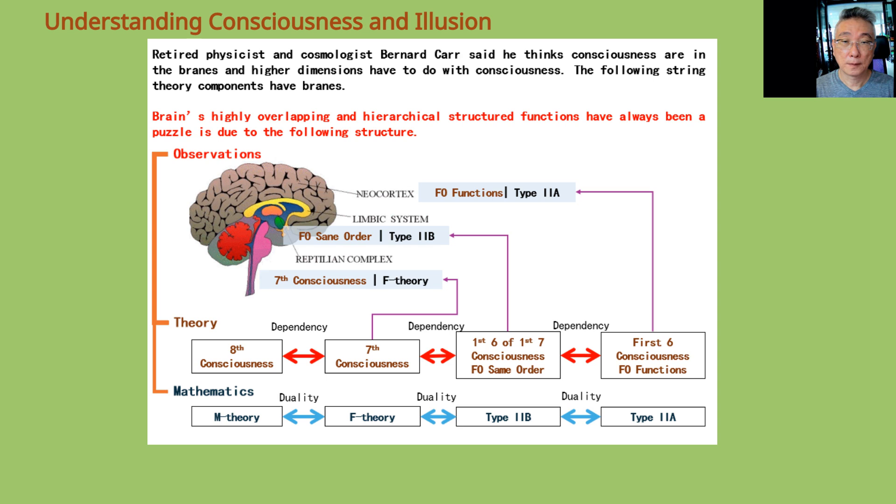One of the biggest puzzles in neuroscience today is the highly overlapping and highly structured functions that have been observed in our brains. The dependencies, as described by Yogacara Buddhism, supported by the mathematics of string theory, is key to solving this puzzle.